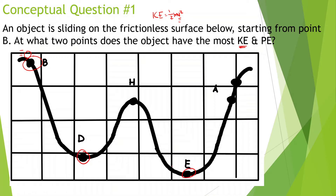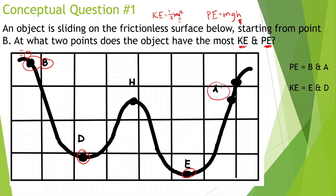A lot of people think kinetic energy is going to be the most at the lowest points, which is true many times. But it's going to be the most when it's going the fastest, which is many times also at the lowest point. For potential energy, the formula is mass times gravity times height, so it's dependent on height. We're going to have point B and point A as the highest.